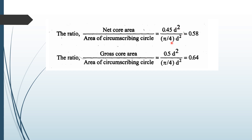The net core area to circumscribing circle area ratio equals 0.45 d² / (π/4 · d²), and the gross core area ratio is 0.5 d² / (π/4 · d²) = 0.64. There is a difference between these two ratios: the net core area ratio is 0.58 and the gross core area ratio is 0.64.